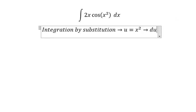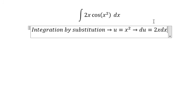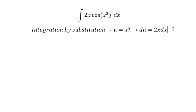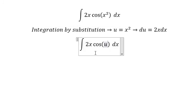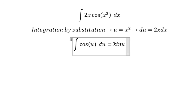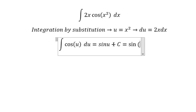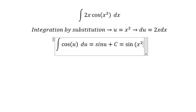So du equals 2x dx. We change the variable to u, and 2x dx we change to du. We integrate to get sin(u) plus C. Substituting back, u is equal to x squared, so the answer is sin(x squared) plus C.